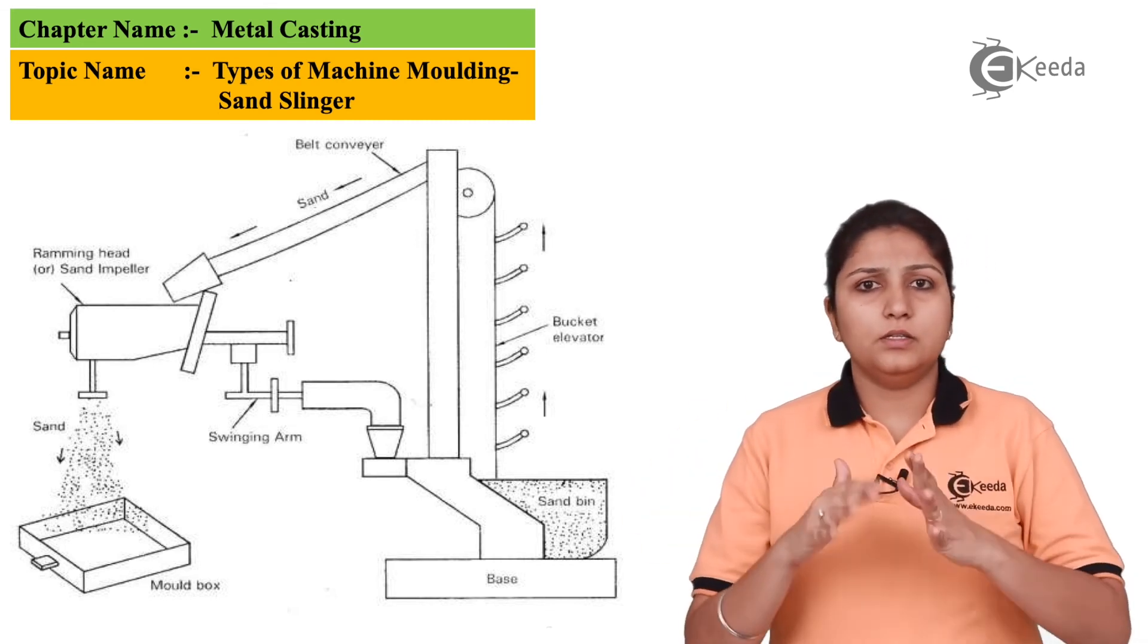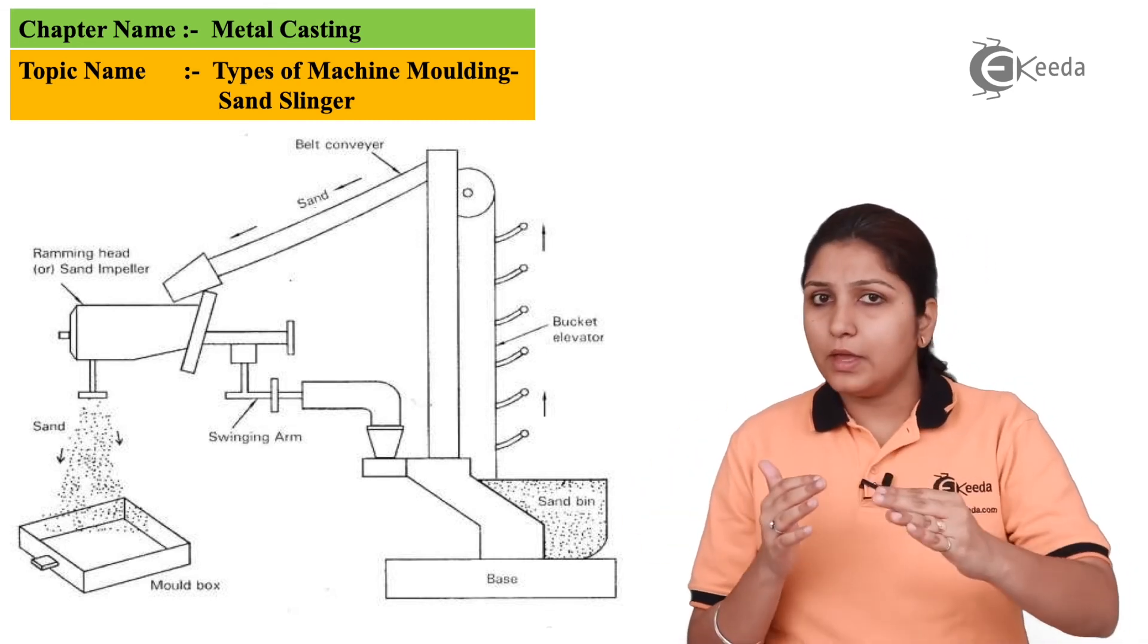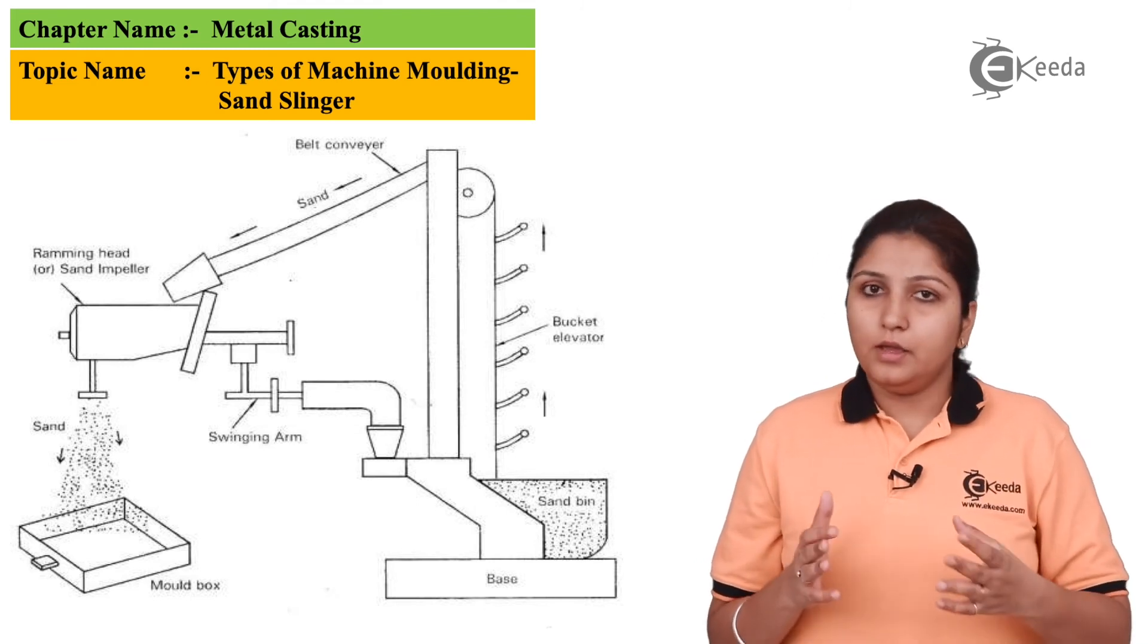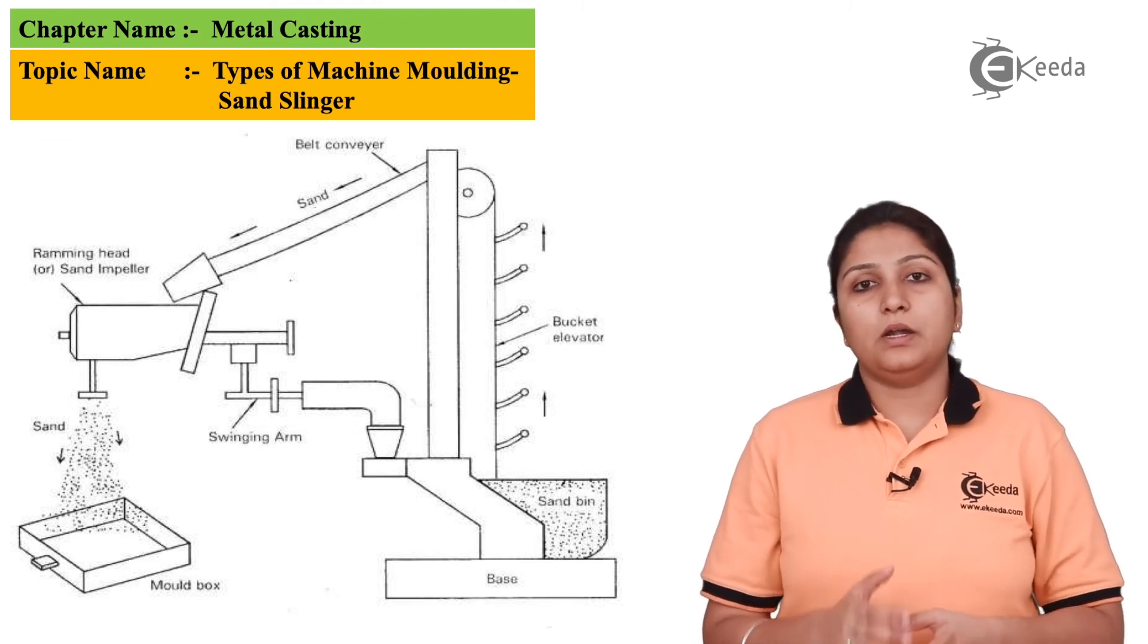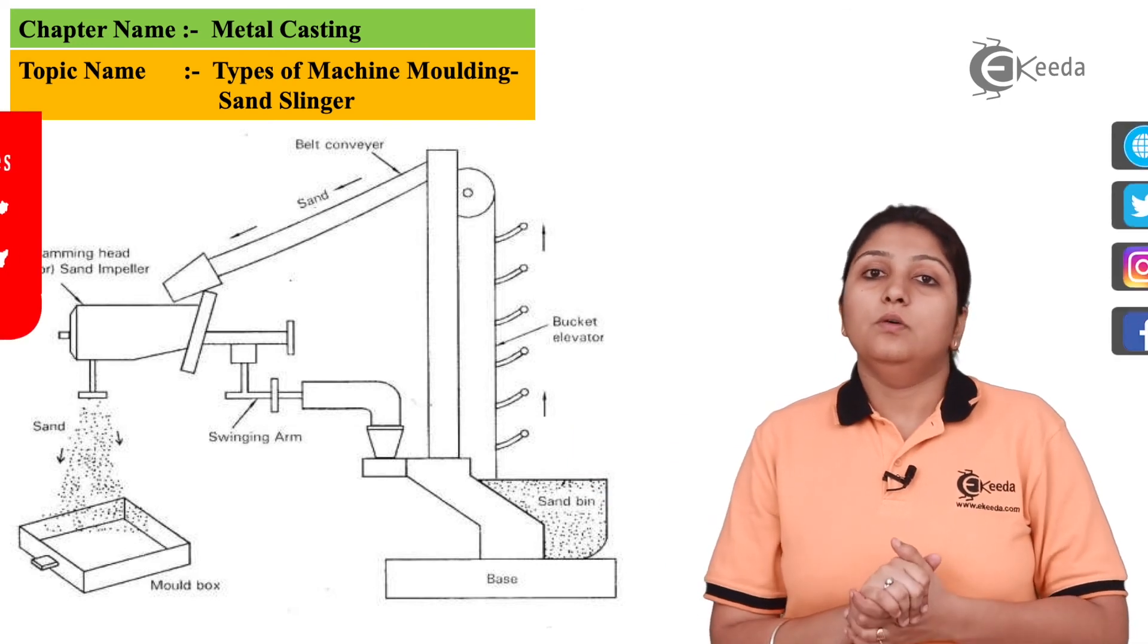This is the process of a sand slinger. It just helps to vibrate and remove the excess particles, and only the particles which are needed get settled. Excess particles are rammed off the mold.